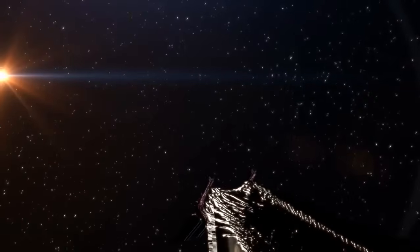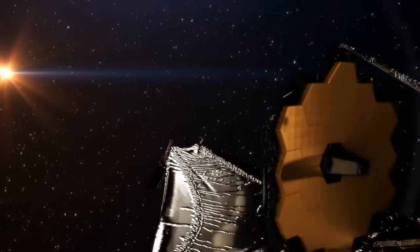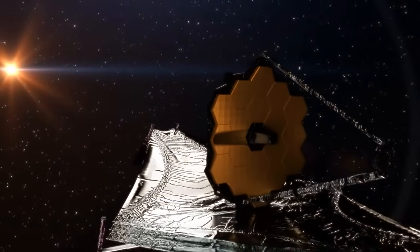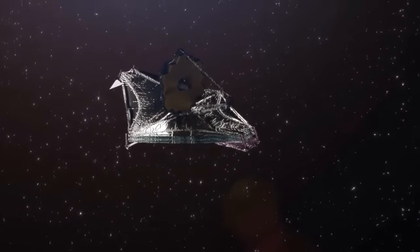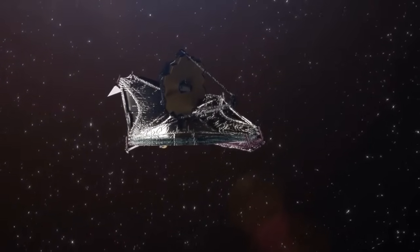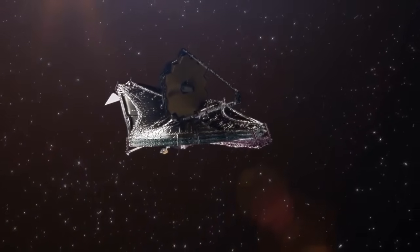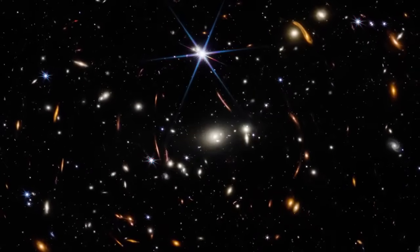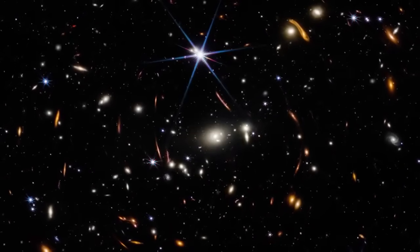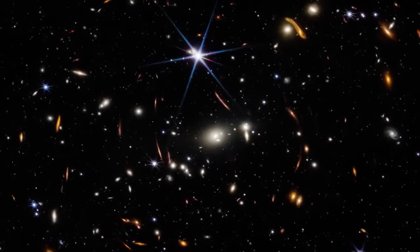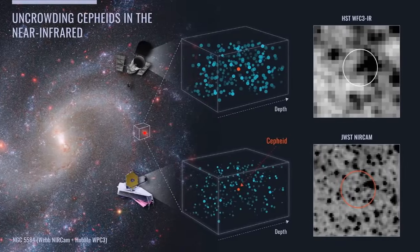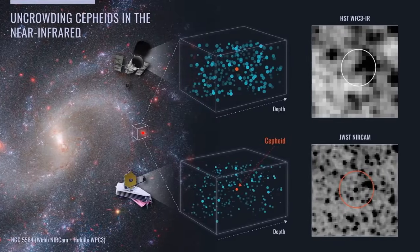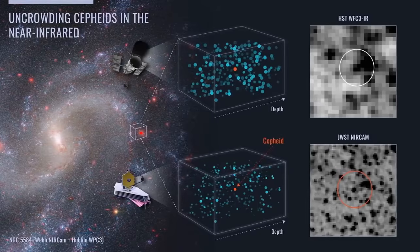The advent of the James Webb Space Telescope brought fresh insights into this problem with its unprecedented resolution and sensitivity. The JWST has been able to look further back in time and at fainter objects than ever before. It was anticipated that the data from JWST would help refine the measurements of the Hubble constant. However, early observations have seemed to complicate the picture even more, providing new data that may not fit neatly within our existing models.